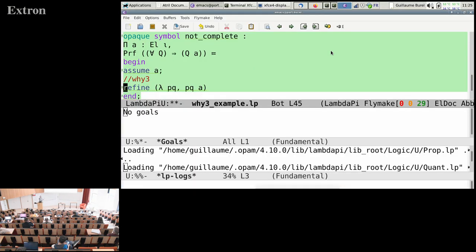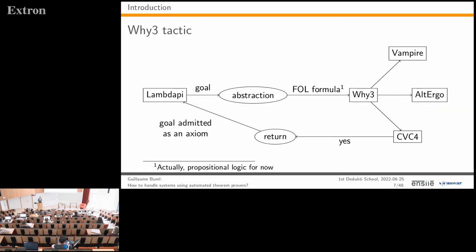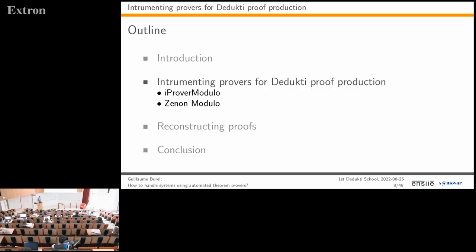Then there is the further question of encoding higher-order logic into first-order logic to pass it to first-order provers, but we want to stick to what can really be done for now. That was the first part: from lambda-pi to automated theorem provers. Now we look at the other direction: making automated theorem provers produce Dedukti or lambda-pi proofs.